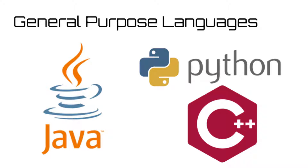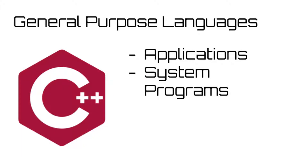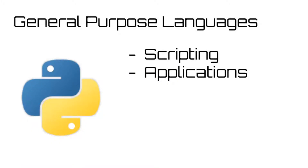They each have their own different benefits over one another. Java is best at developing games and interactive webpages, C++ is best for writing applications and system programs, and Python can act as a scripting language for web programming, as well as writing applications and data analysis.